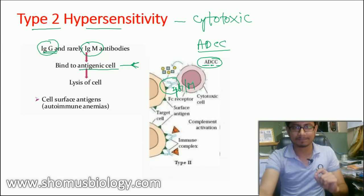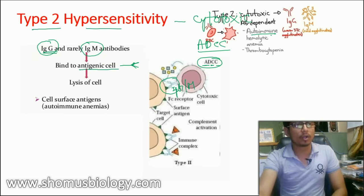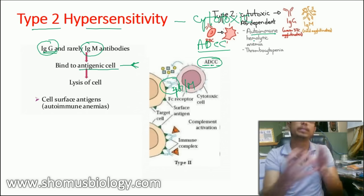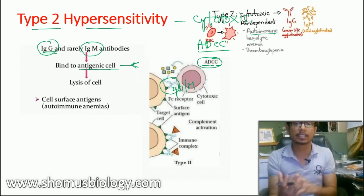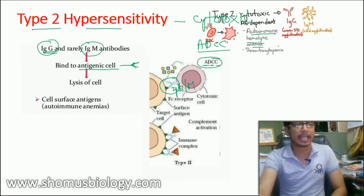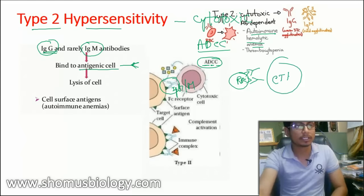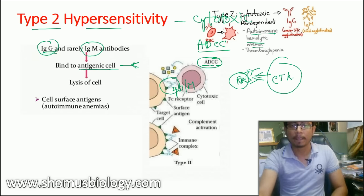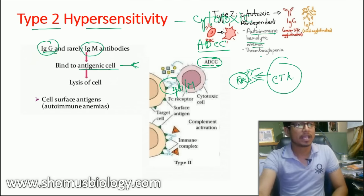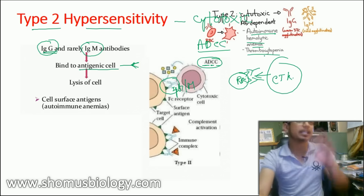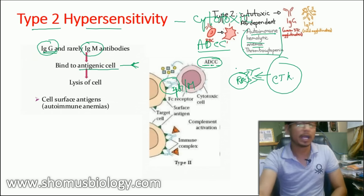Examples of Type 2 hypersensitivity include different autoimmune responses — where body cells recognize self cells as pathogens. It also causes hemolytic anemia, where the target cell is the red blood cell. When cytotoxic killer cells destroy red blood cells, the body is left with very little hemoglobin, resulting in anemia. Thrombocytopenia is another example of a disease belonging to Type 2 hypersensitivity.